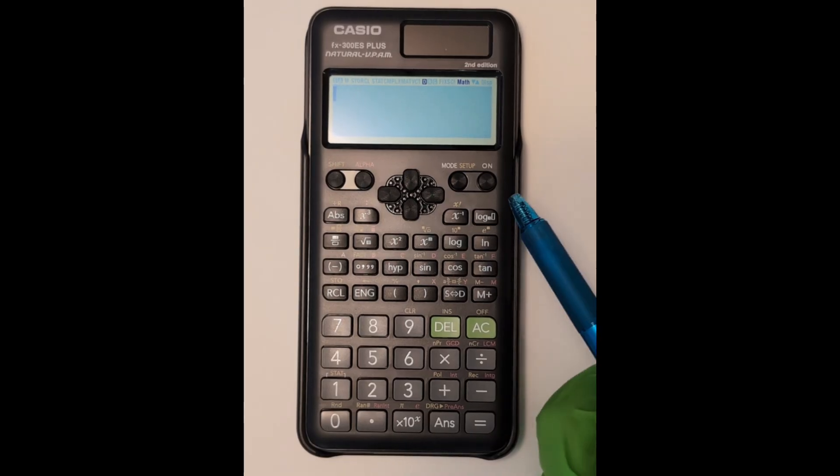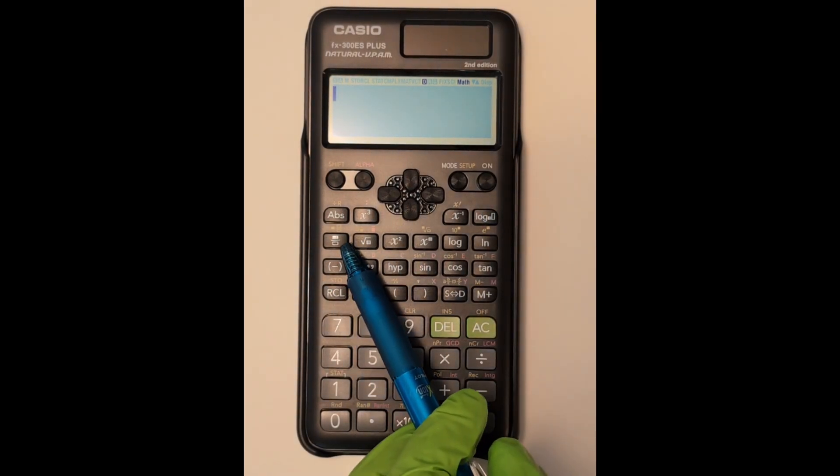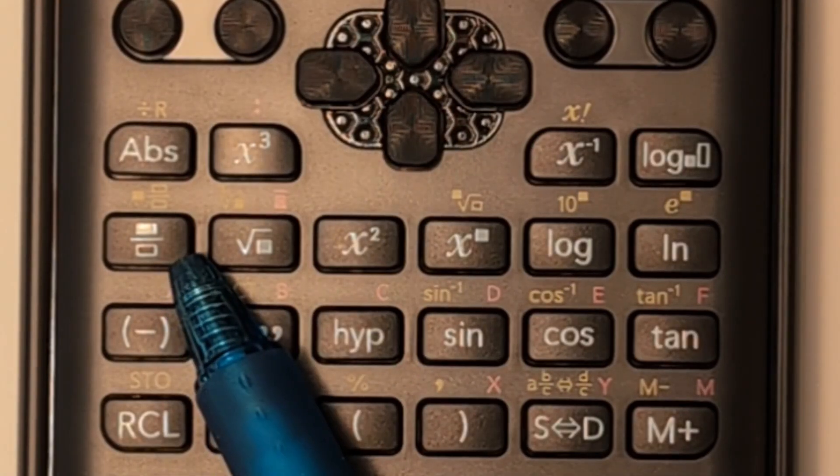Looking at some basic functions on the Casio FX300ES Plus calculator. The on button is on the upper right. We're going to start with a fraction key which is in the leftmost column.